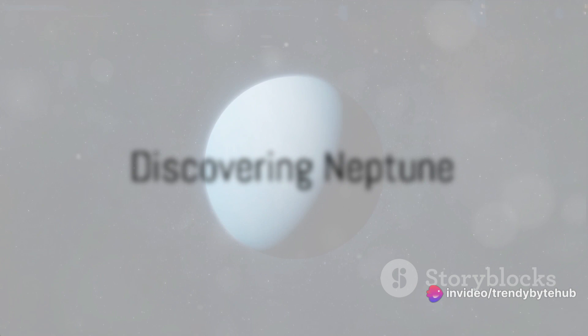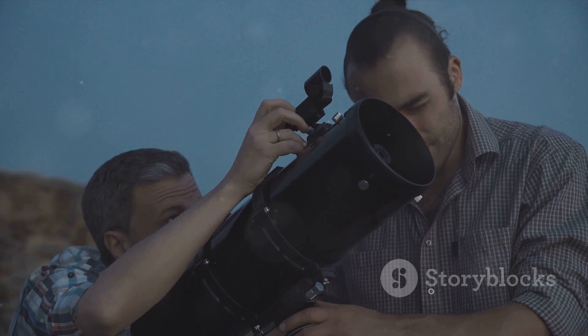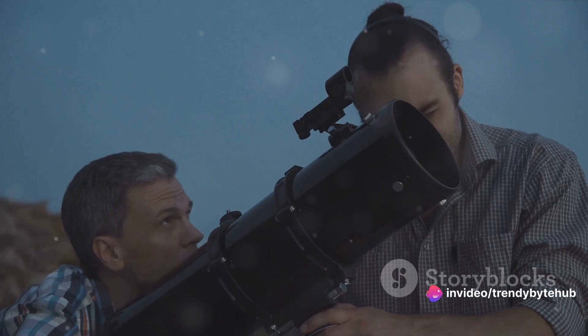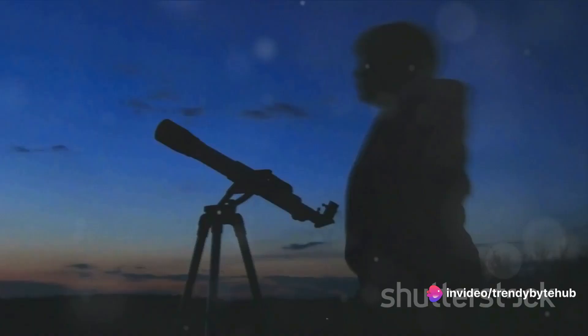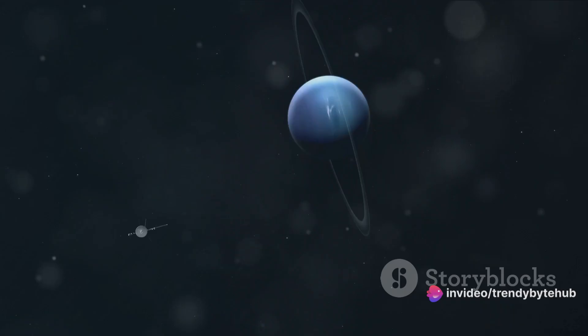Indeed, the discovery of Neptune, the eighth and farthest known planet from the Sun in our solar system, is a remarkable tale of intellect and precision. The year was 1846, and the protagonists of our story were two mathematicians: Urbain Le Verrier and John Couch Adams. The duo didn't just stumble upon Neptune, they predicted its existence.